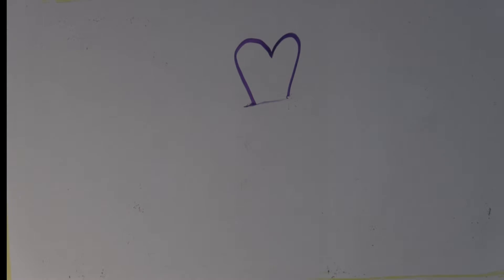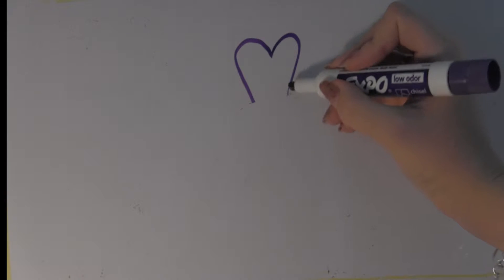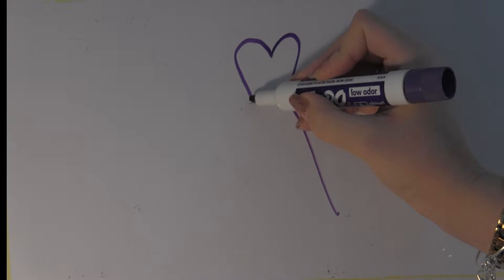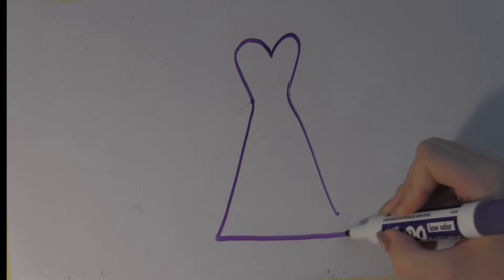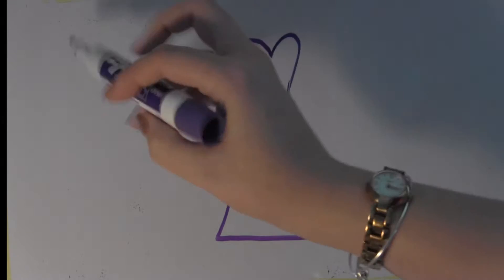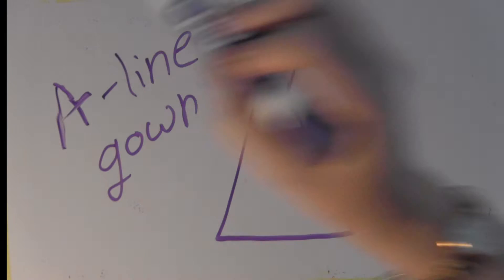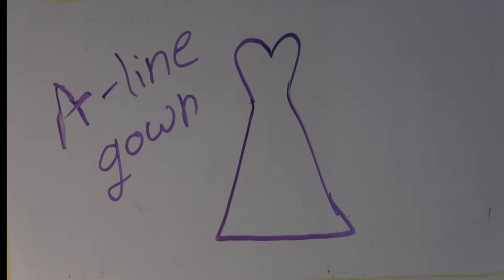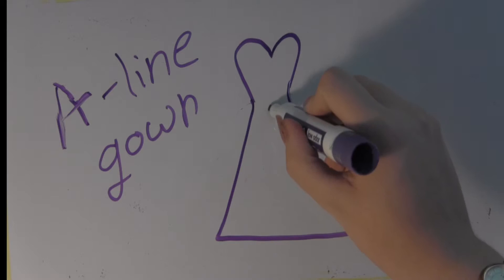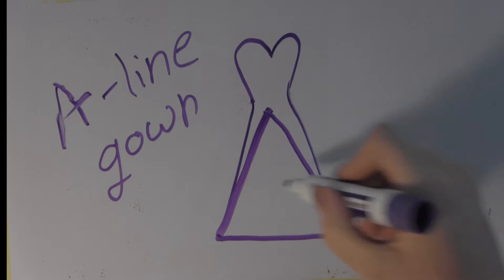Next up is the A-line gown. This is a great choice and is popular among brides because it's flattering on almost every body type. Not a lot of brides know of its existence, so they don't ask for it specifically though. The bodice is like a ball gown where it's fitted at the top, but instead of having a ton of volume in the skirt, it just kind of gracefully falls away from the body. And it actually makes a capital A shape in the skirt, so that's where it gets its name from.